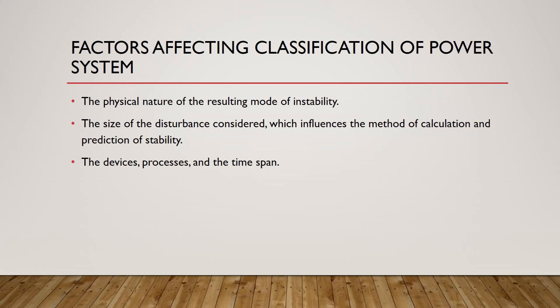The factors affecting the classification of power system stability are: number one, the physical nature of the resulting mode of instability — is it instability in voltage, frequency, or rotor angle? Number two, the size of the disturbance — large or small — because different calculation methods apply; for small disturbances we can linearize our equations, but not for large disturbances. Number three, the time span — some disturbances need to be examined over a long period of time and others over a short period.